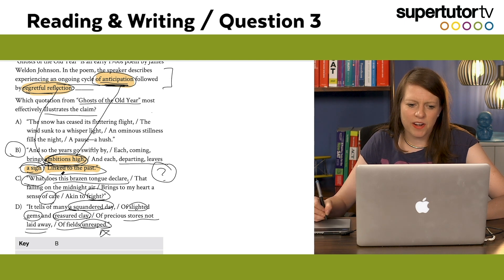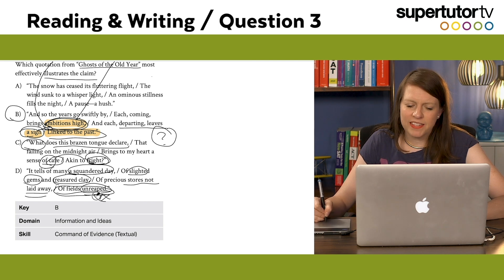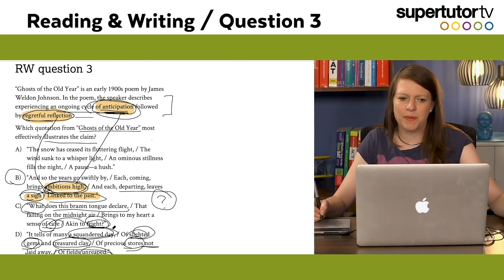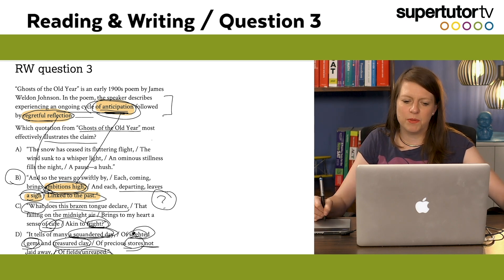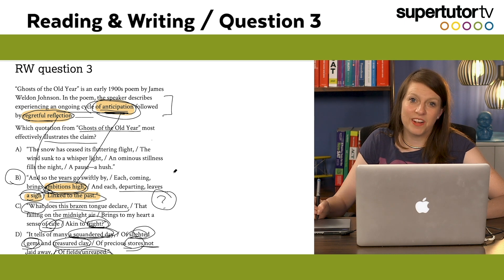Option B is the one closest to anticipation and regretful reflection — ambitions high is anticipation, and the sigh linked to the past is the regretful reflection. The others are more linear negativity — fields unreaped, squandered days. Notably, I've never seen poetry on the SAT before in the last installation or the one before it — this is new stuff. This looks like AP Literature and Language.